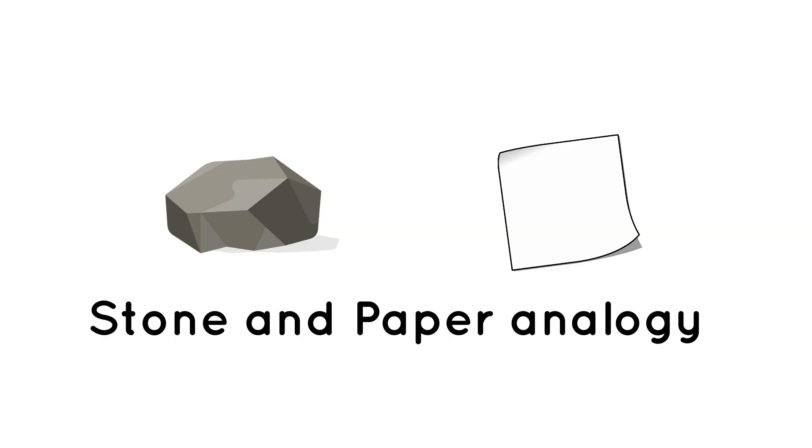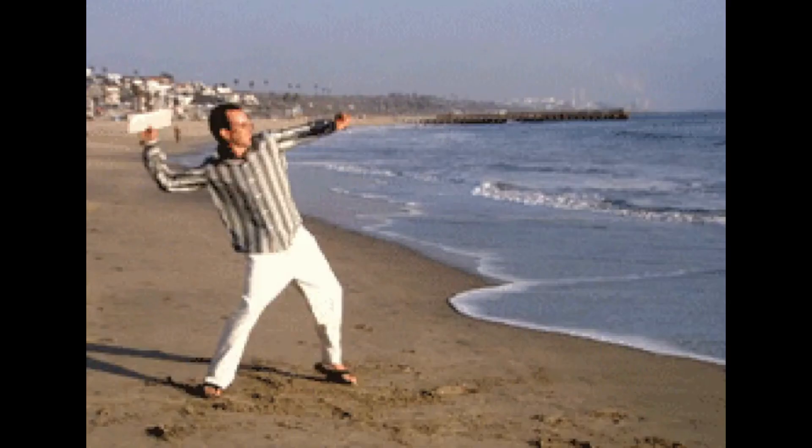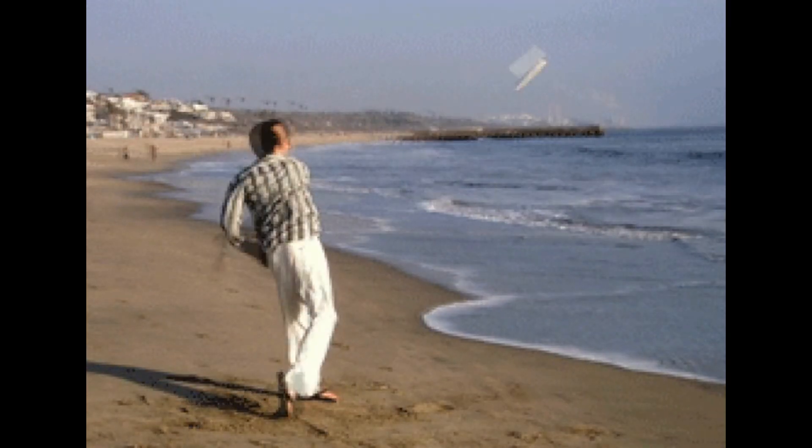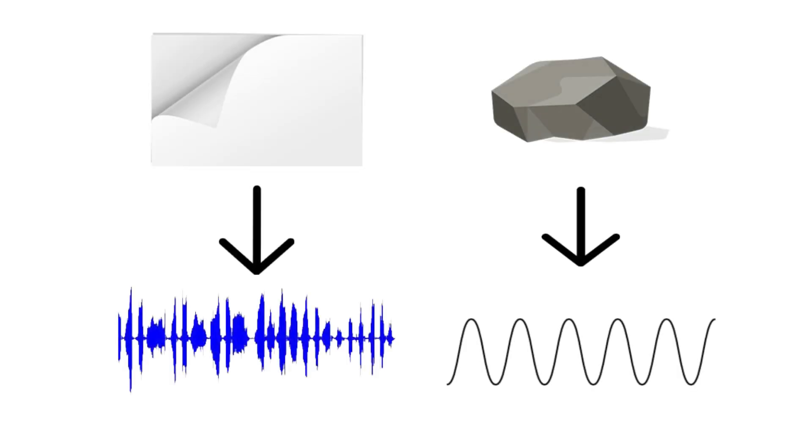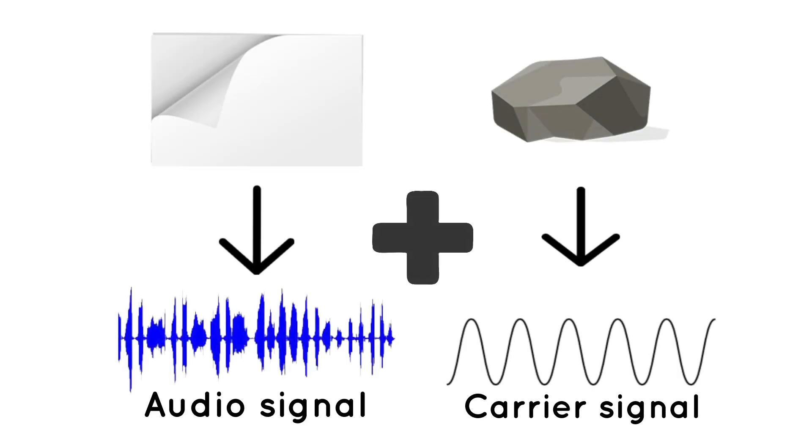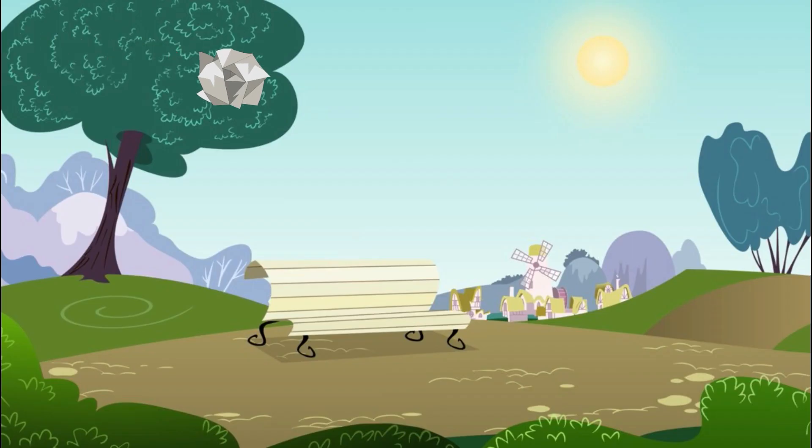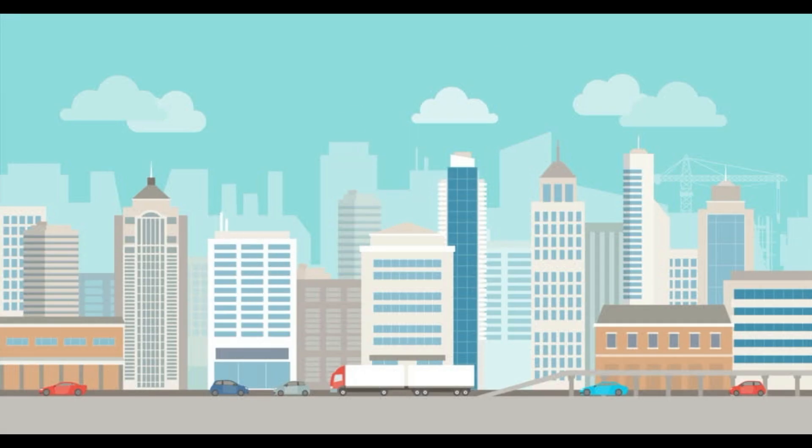This can be simply explained using famous stone and paper analogy. Imagine a paper as your audio signal and when you throw it in the air, it's so obvious that paper will not go any distance since it lacks the weight. Now wrap the paper around a stone which represents your carrier signal. When you throw the stone wrapped paper now, it will go much further due to the stone's weight. Modulation works the same way as paper and stone where the high frequency carrier signal provides the ability to reach longer distance for audio signal.